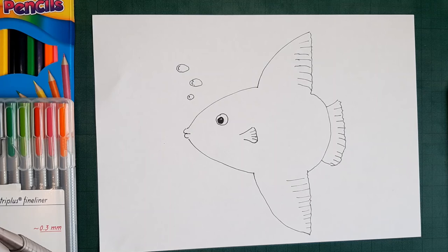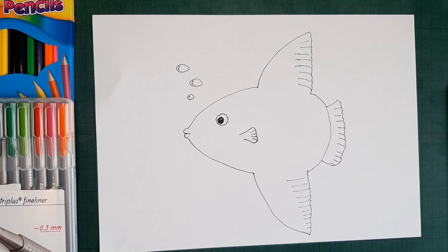And that's just to show that it's a bubble and that is our sunfish, nice and easy. Then we have our colors here to the side, and we can use them to color it in.